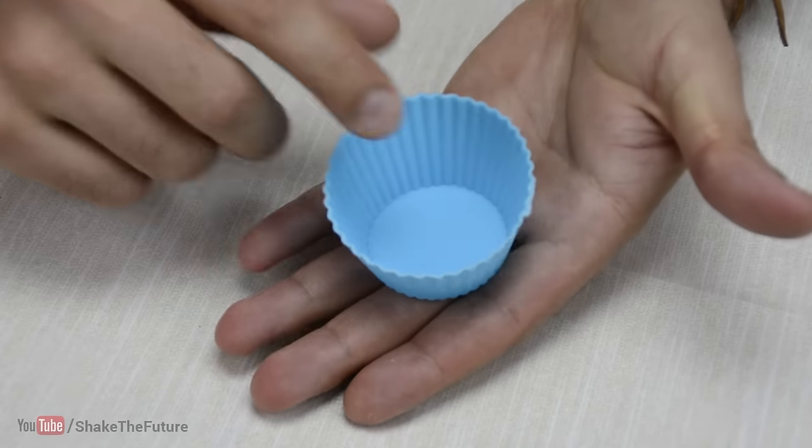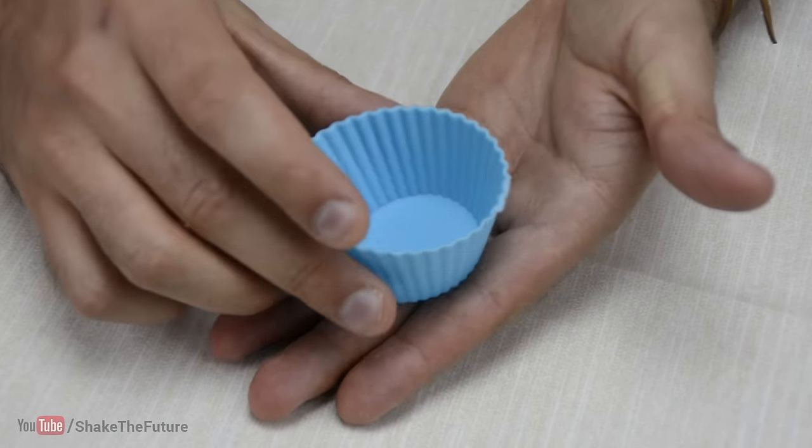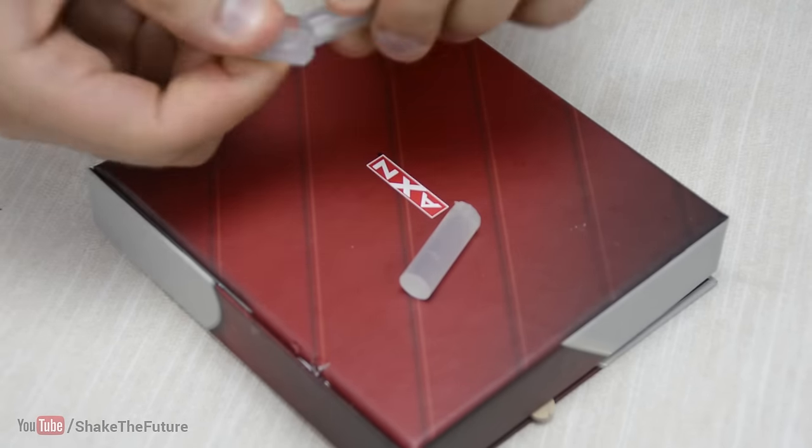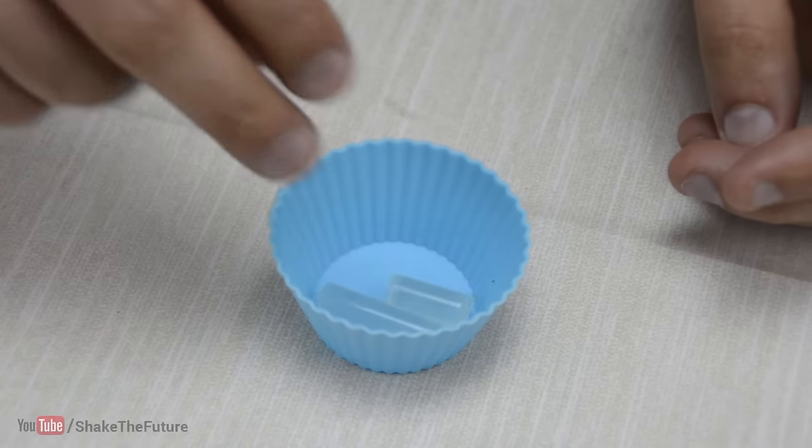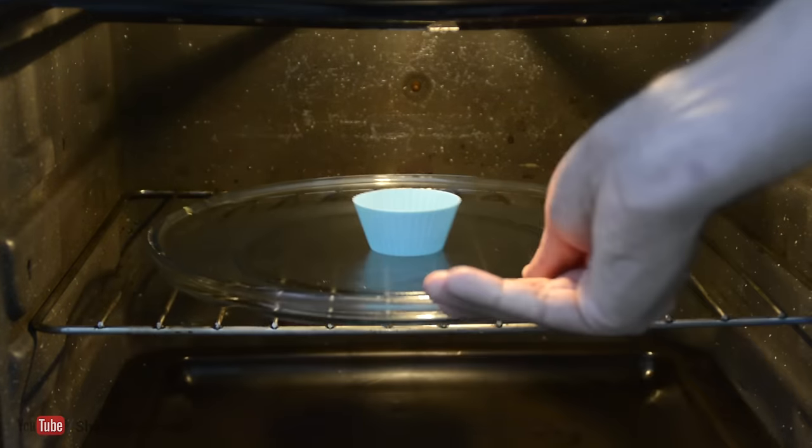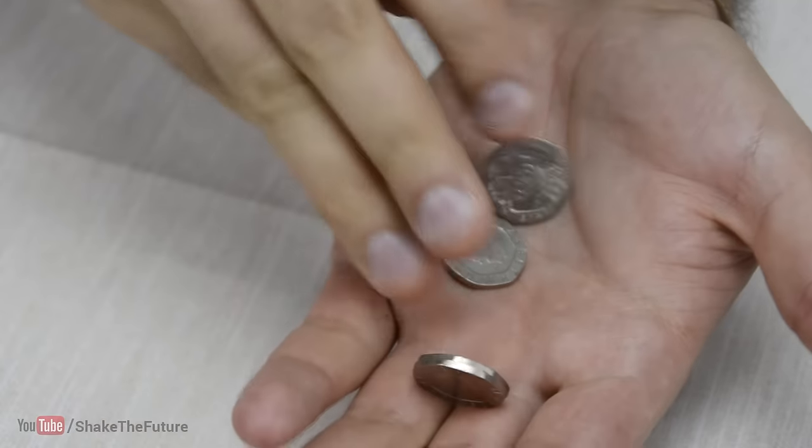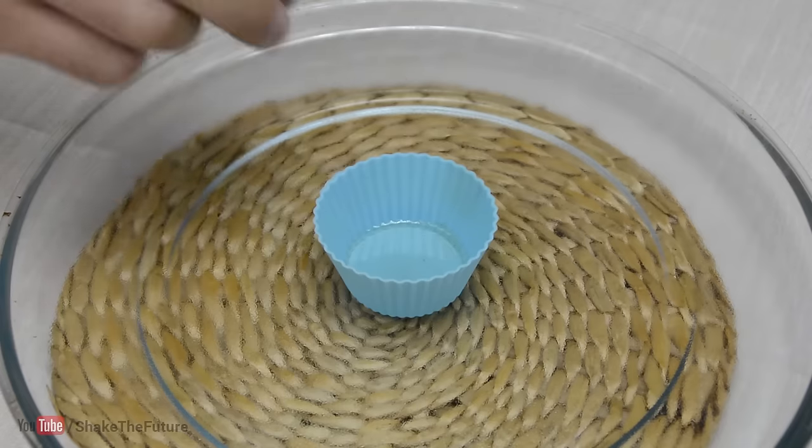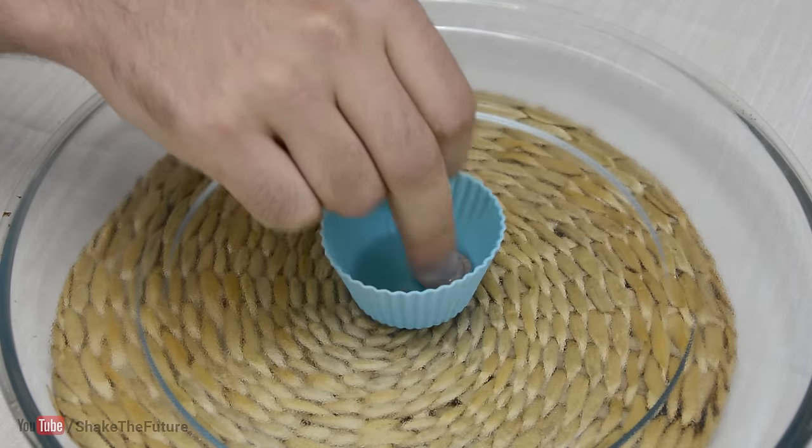Get a silicone mold. Cut a piece of glue from a glue stick. Put the glue in a mold and a mold in the oven. When the glue has melted, put something on top. I use these 20p coins.